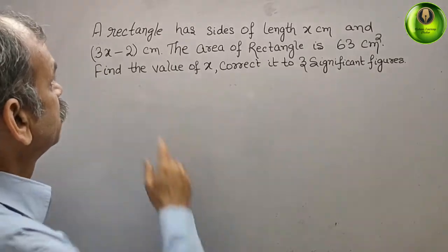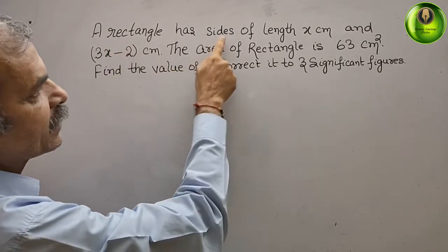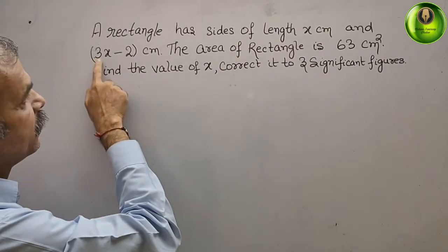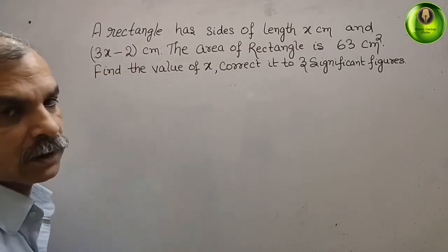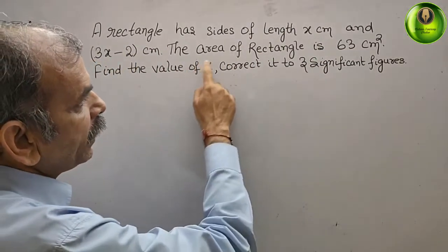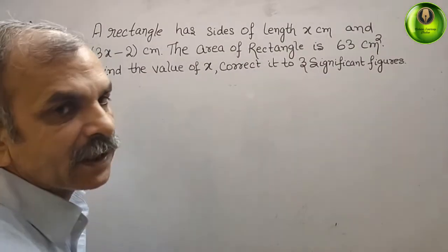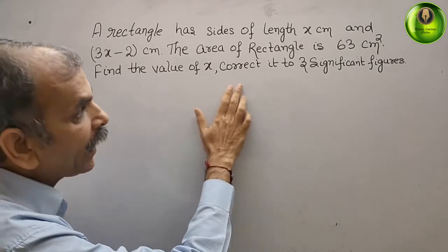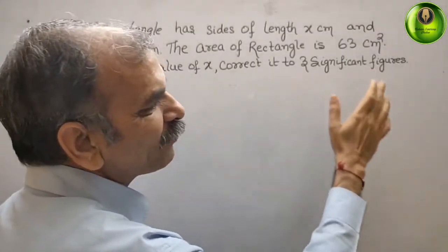Your question is: a rectangle has sides of length x centimeter and 3x minus 2 centimeter. The area of rectangle is 63 centimeter square. Find the value of x, correct it to 3 significant figures.